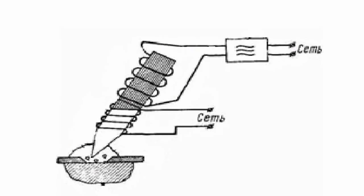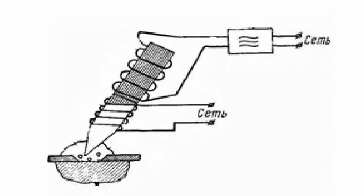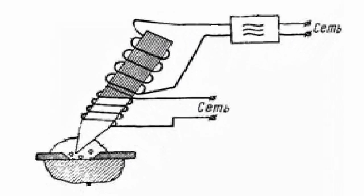The ultrasonic soldering irons are produced both with the heating of the working rod and without heating. In the latter case, the solder is melted due to the heat from a separate source, such as a burner flame, for example. Due to the fact that the working rod of the soldering iron is also subject to cavitation damage, it is made of a resistant silver-nickel alloy.